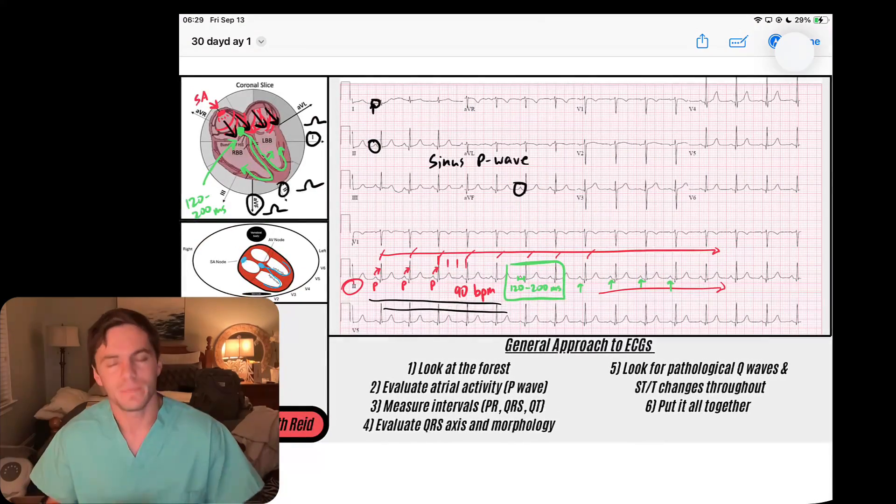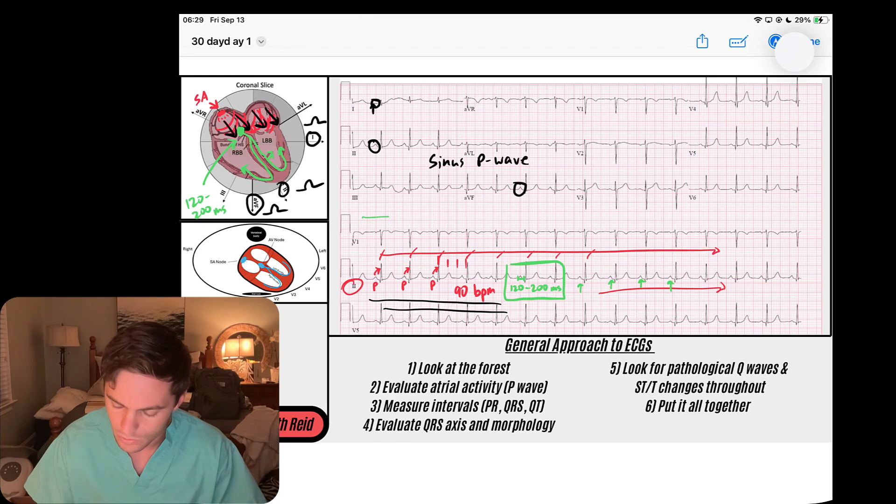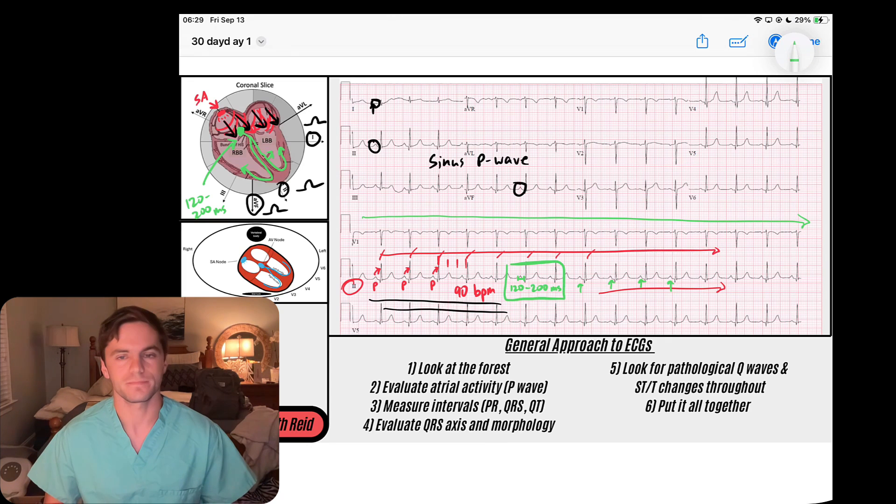You might look at this PR interval and this PR interval and just keep scanning through. Make sure all the PR intervals are the same. Make sure there are no gaps in beats, because if there is a gap, that could tell you the AV node failed. If I scan through this whole rhythm, I don't see that to be the case.